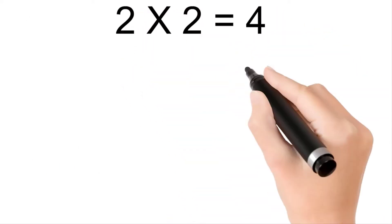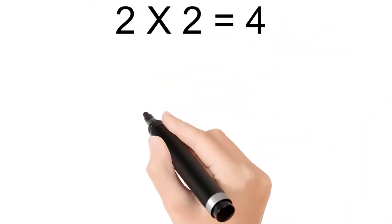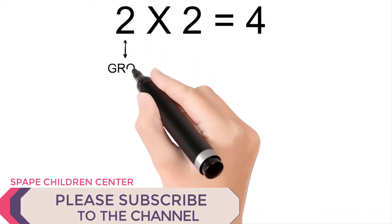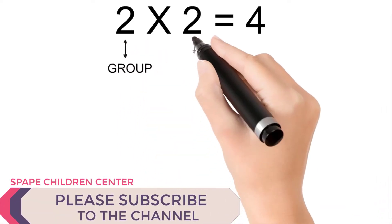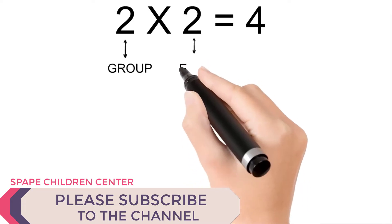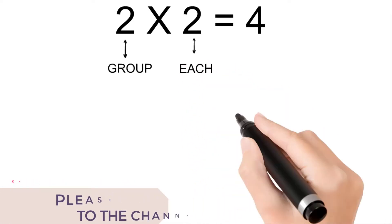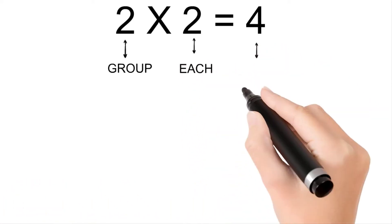Two times two is four. The first two is a group, the second two is each, and the four is total.